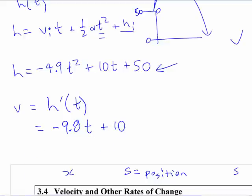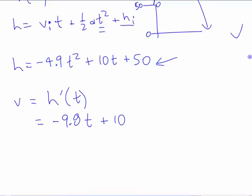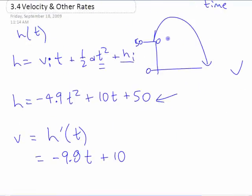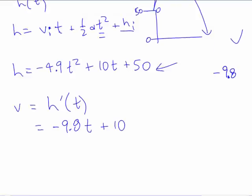If we wanted to find the acceleration in this situation, you already know what the acceleration is. The initial velocity isn't causing any acceleration. The initial height doesn't cause any acceleration. Gravity is the only thing here. The acceleration should be negative 9.8, being accelerated downward.